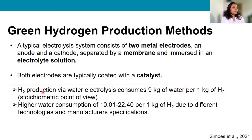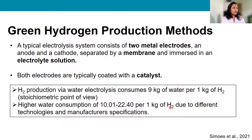From a stoichiometric point of view, for every kilogram of hydrogen you need 9 kg of water. In practice, however, it's much higher — ranging between 10 to 22 kg of water per kg of hydrogen — depending on the technology used and the manufacturer specifications.